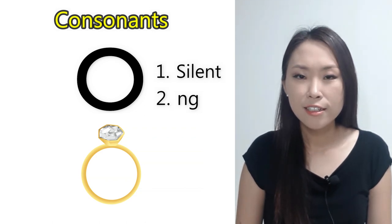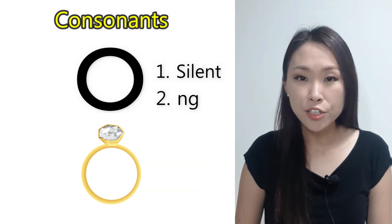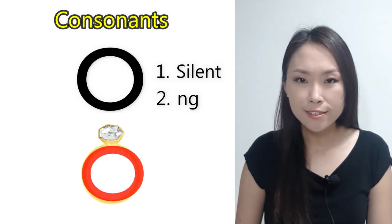이응, 응, 응, 응, 응, 응. In this case, the romanized letter for 이응 is NG. The shape of the ring looks like 이응, 응, 응, 응, 응.